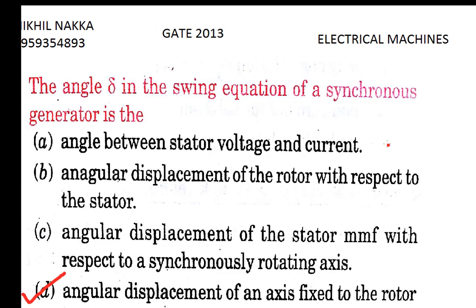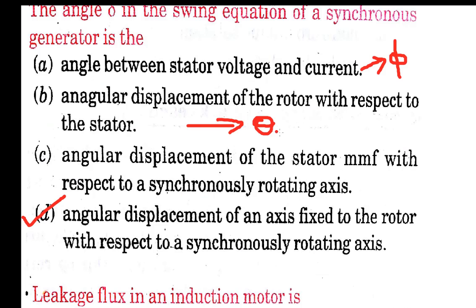Option A is the angle between stator voltage and current, which is nothing but the power factor angle phi — this is not Delta. Option B, angular displacement of rotor with respect to stator, is nothing but theta, which is a mechanical angle.